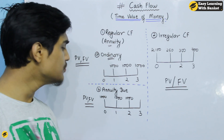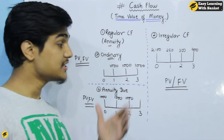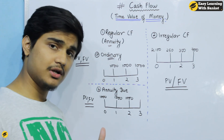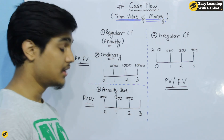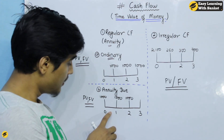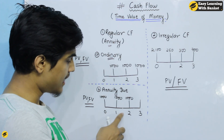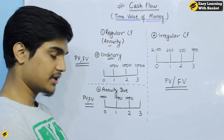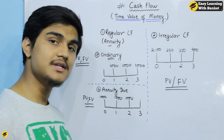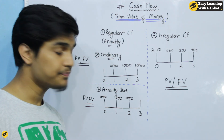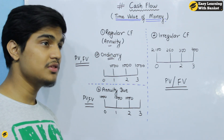Now, what about annuity due? Annuity due gives a payment at the beginning of the period, rather than at the end. So the other type starts at the beginning — payment is made at the start of each period.